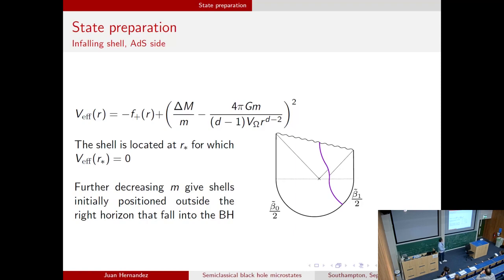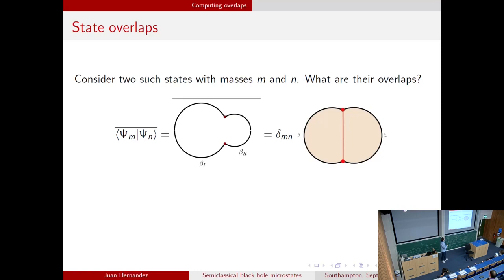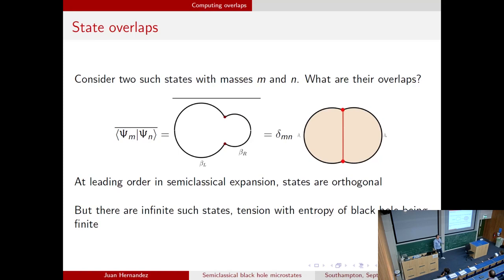We can compute their overlaps using the Euclidean gravitational path integral. The BRAs and KETs are prepared through a CFT path integral, and we find the overlap by doing a gravitational path integral subject to those boundary conditions. In the semiclassical approximation, we find the classically allowed solutions filling those boundary conditions and sum over their on-shell actions. If the masses are macroscopically different, there are no solutions filling those boundary conditions, so at leading order in the semiclassical expansion the states are orthogonal. This is the tension — they seem orthogonal at leading order, and moreover we can build an infinite number of them by increasing the mass by some fixed amount.